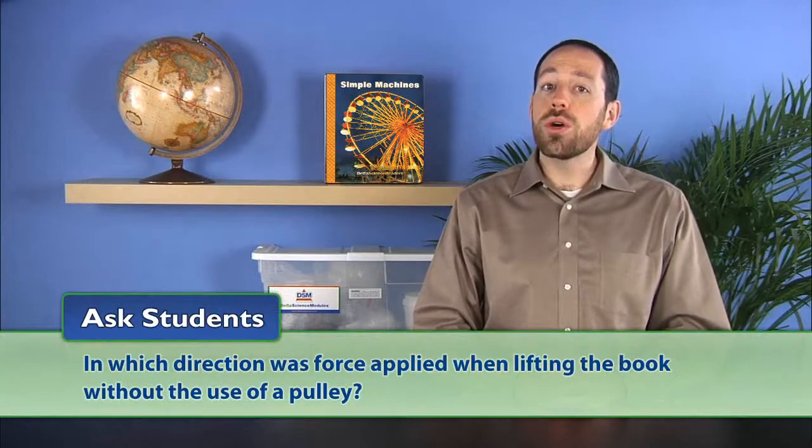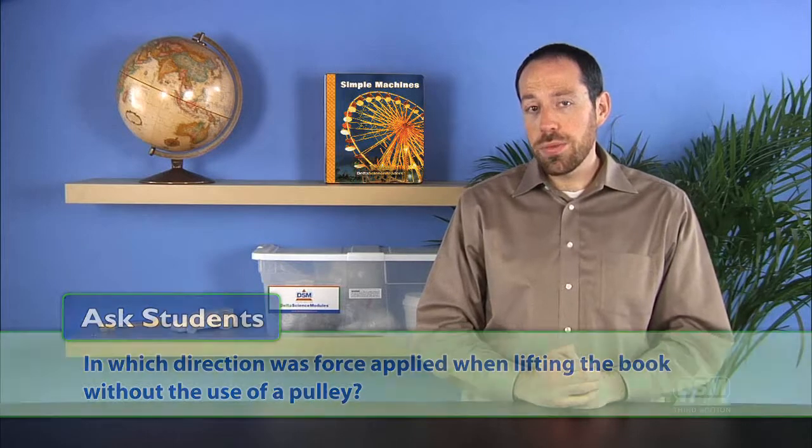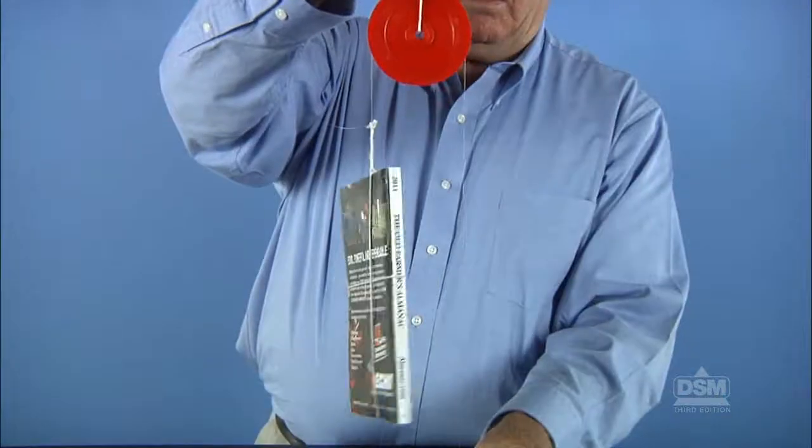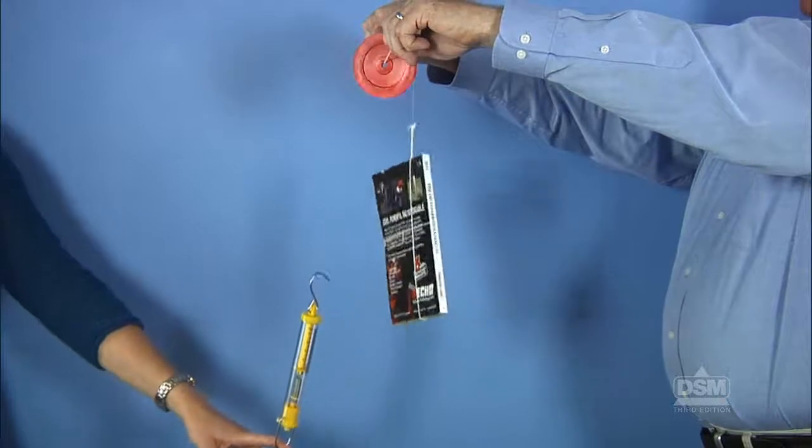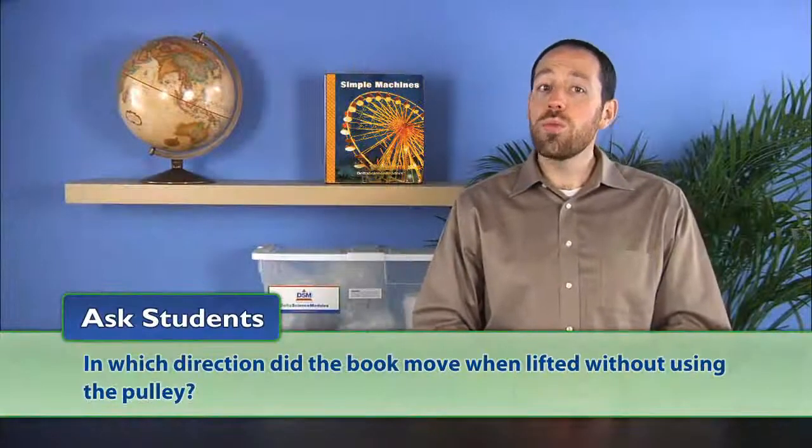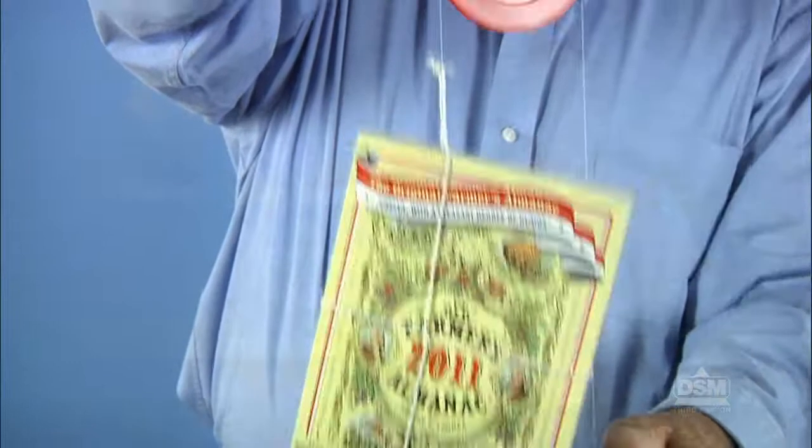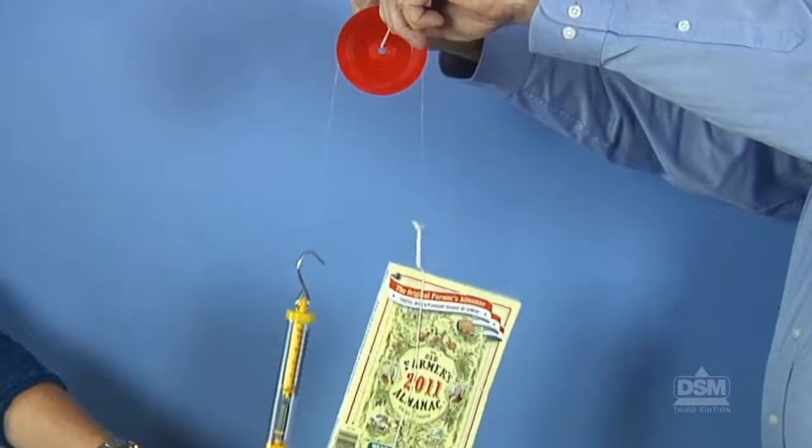Ask students in which direction was force applied when lifting the book without the use of a pulley. The student should respond that the force was applied upward. Then ask in which direction was force applied with the help of a pulley. The student should answer that the force was applied downward. Ask students in which direction did the book move when lifted without using the pulley. Students should reply that the book moved upward. Then ask in which direction did the book move when lifted with the pulley. Students should say that the book still moved upward.